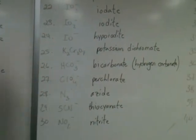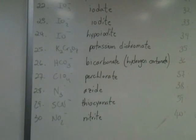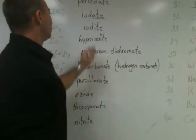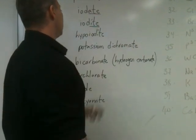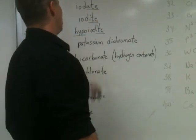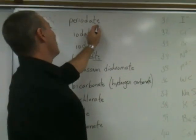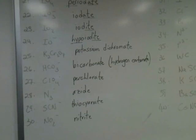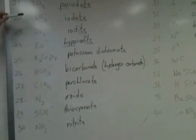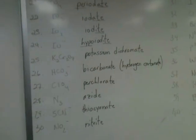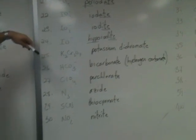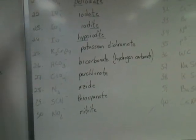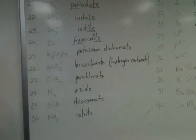Notice the prefixes and suffixes that are added. When it's the regular one, we call it -ate; one less oxygen is -ite; two less oxygens is hypo-ite; and when it's got one extra, it's per-ate. So: periodate, iodate, iodite, and hypoiodite. It's good to memorize that series because the chlorate series goes through the same sequence: perchlorate, chlorate, chlorite, and hypochlorite.